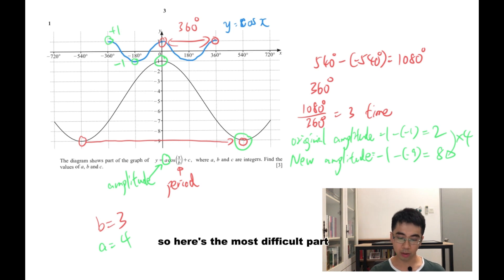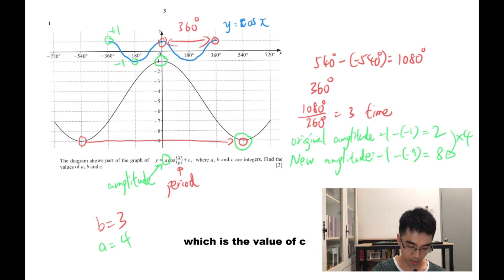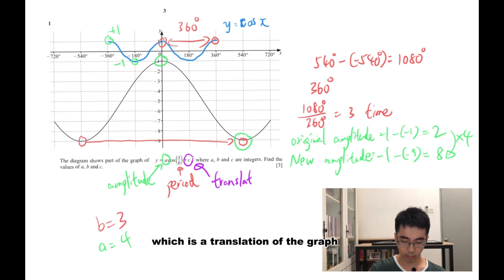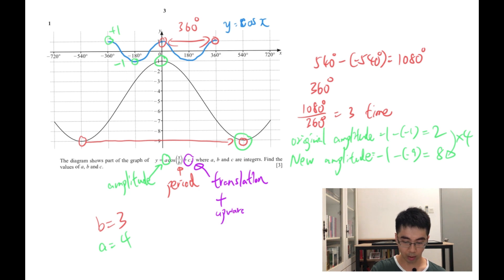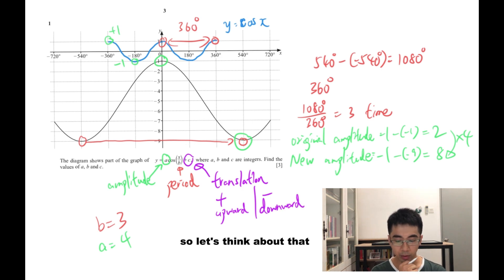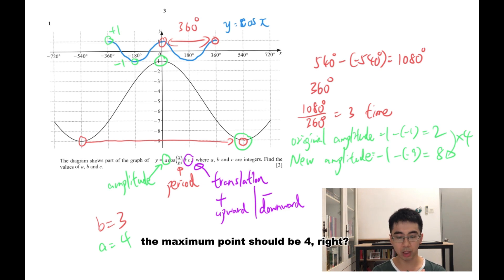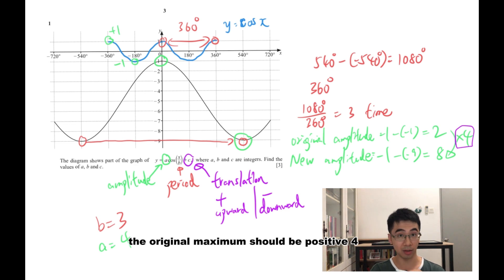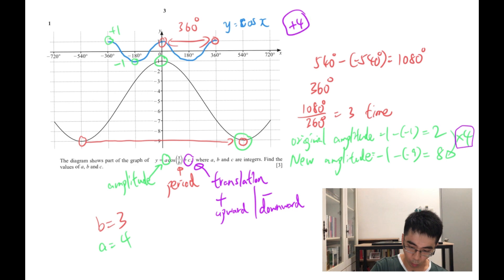The most difficult part is finding the value of c. This value involves a transformation — specifically a vertical translation of the graph. If the value is positive, the graph moves upward; if negative, it moves downward. After applying a and b, the maximum of the graph should be positive 4 and the minimum should be negative 4, because we multiplied by 4.